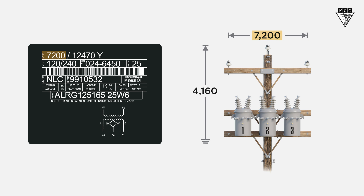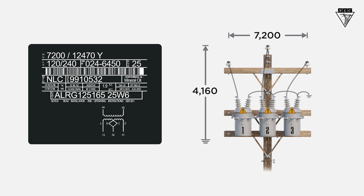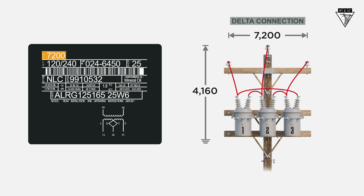If we connected these transformers phase-to-neutral with a system voltage of 7200 volts, we'd only get 4160 volts on the primary side, supplying insufficient power to the customer. Note that there is an additional method to determine a delta connection: if the transformer's nameplate has only one number for the primary coil voltage rating, it should only be used for delta connections.